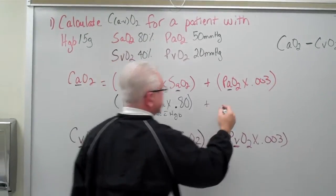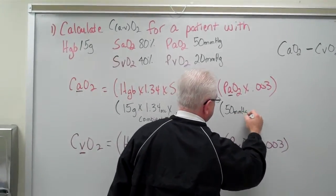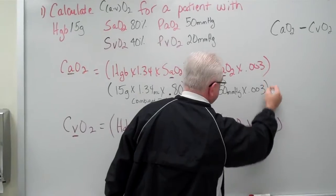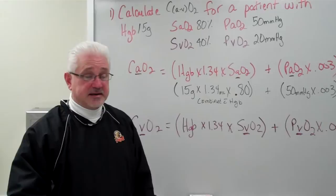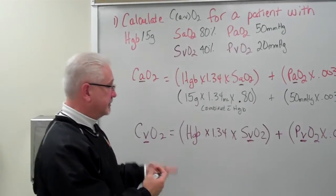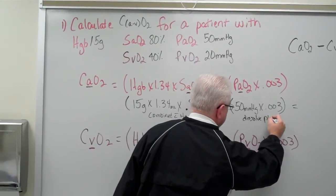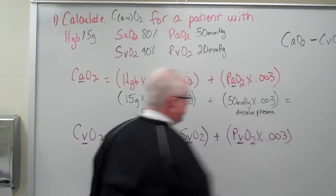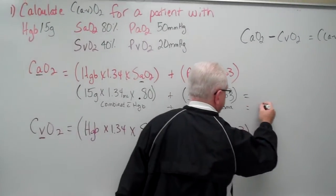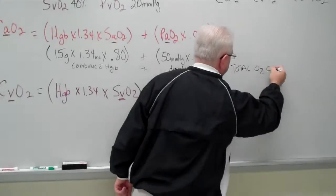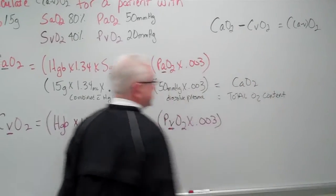Now we're going to do the other part here. And this is the part that's dissolved in the plasma. So, it says my formula says I need to find the PaO2. Well, there it is, 50 millimeters of mercury times 0.003 and that's going to be my CaO2. When I add the total, I have the total O2 content, also known as CaO2 in this situation.